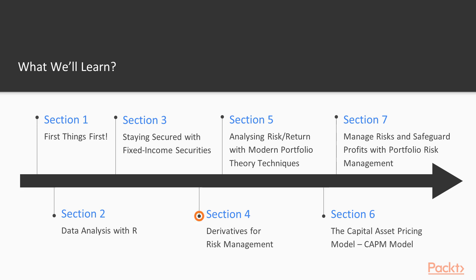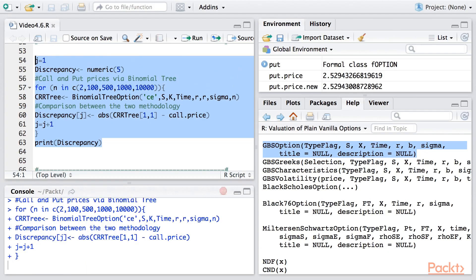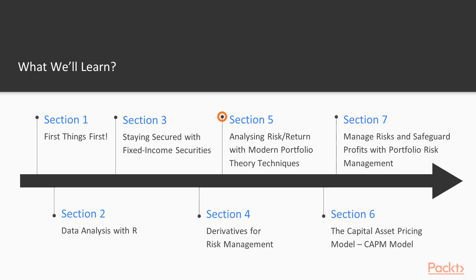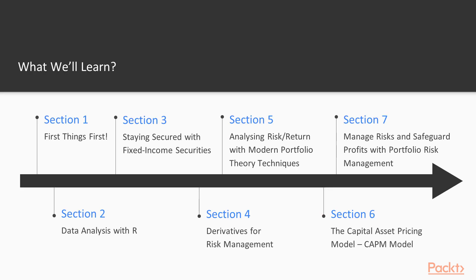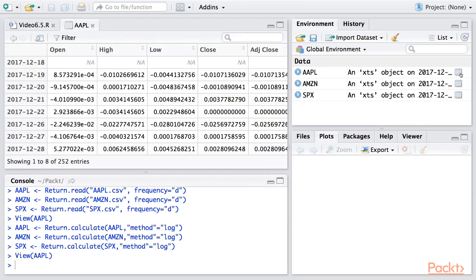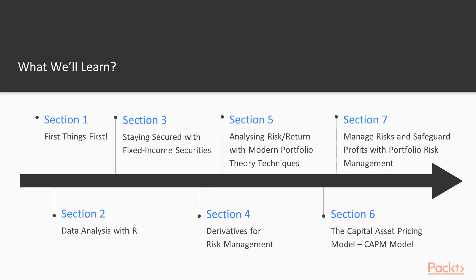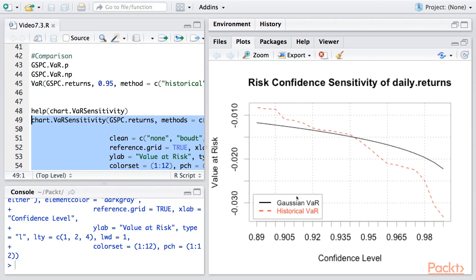Section four is more about pricing options. Derivative options are very widely used and that's why we're dedicating a separate section to this. Section five targets the quantitative aspects of portfolio optimization, while section six is about the famous CAPM model and factor models used in general. Finally, section seven includes details of risk management and portfolio theory, specifically the value at risk model.